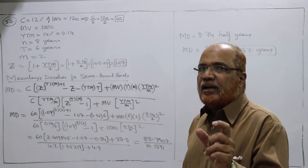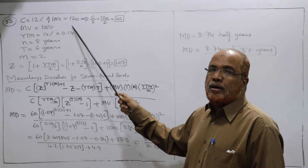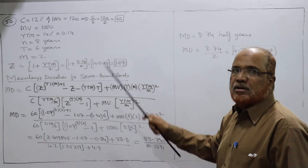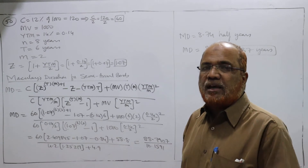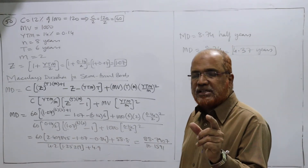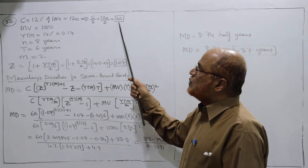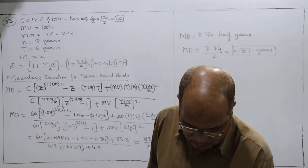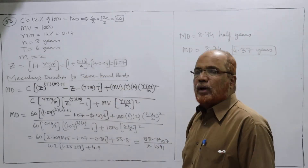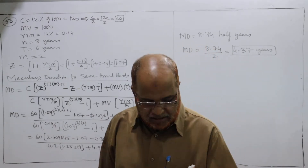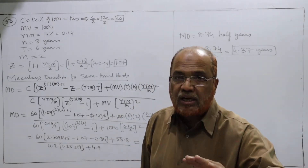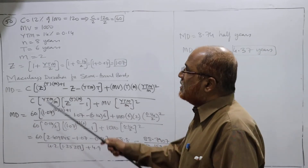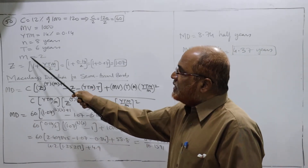C is equal to 12% of 1000. Annual coupon interest is 120 rupees, but since interest is paid semi-annually, 120 divided by 2 equals 60 rupees. So every six months, interest is 60 rupees. Maturity value is 1000. YTM is 14%, that is 0.14. N is equal to eight years, but the problem says find the duration two years after it is issued, so the remaining time period is six years. Therefore T equals six years.